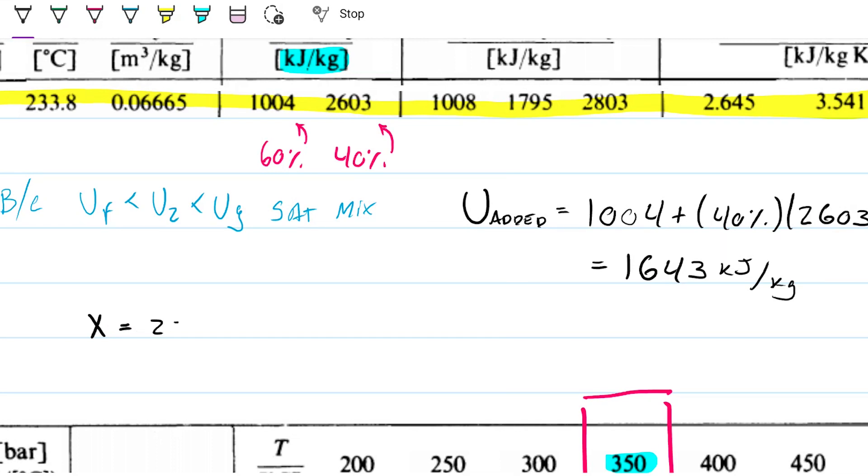minus the 1004, divided by the difference between the 2603 and the 1004. And this happens to be 96.92%.